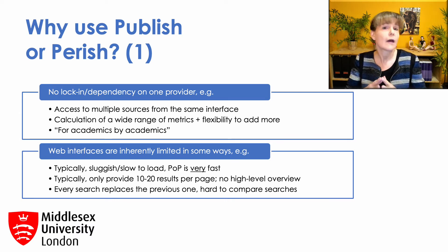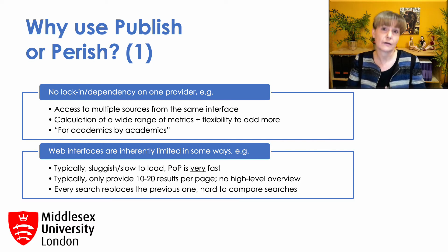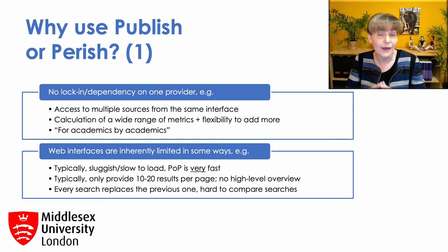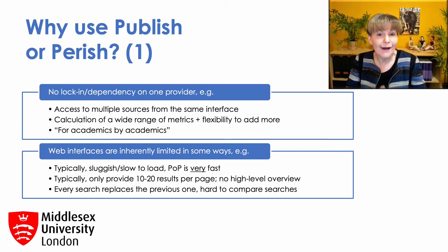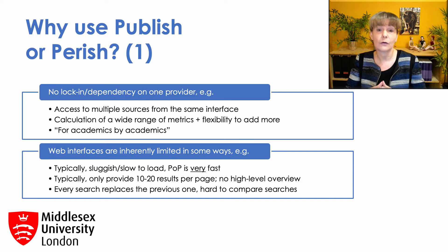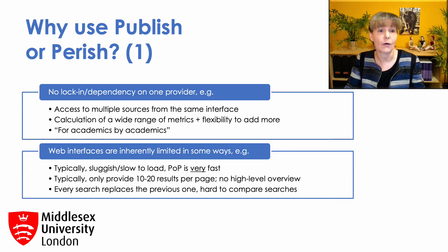Publish or Perish also calculates a much wider range of metrics than the other data sources. Most of the web interfaces are run by commercial companies, and they provide only a limited number of metrics, typically only publications, citations, and sometimes the H-index. As a user, you typically have little influence over what they are offering, and there's usually little opportunity to provide feedback or suggest new features. Publish or Perish is developed by academics for academics, and we listen to users if they suggest new features. Hundreds of new features have been added over the last 15 years.